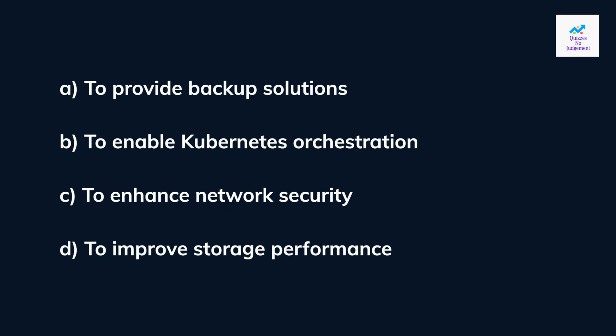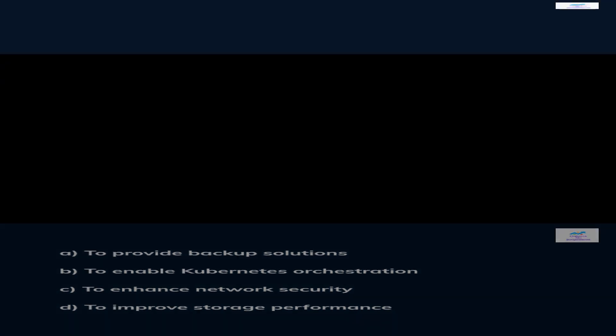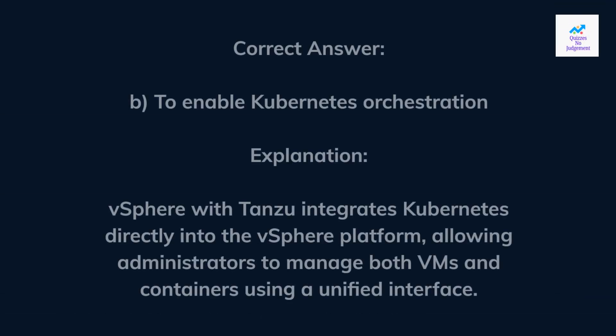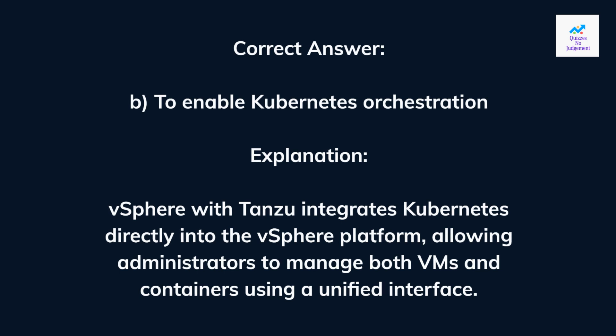The correct answer is b. To enable Kubernetes orchestration. c. To enhance network security. d. To improve storage performance. vSphere with Tanzu integrates Kubernetes directly into the vSphere platform, allowing administrators to manage both VMs and containers using a unified interface.